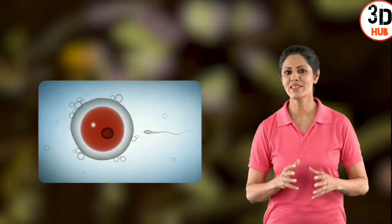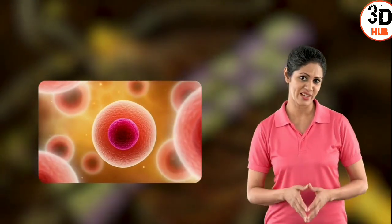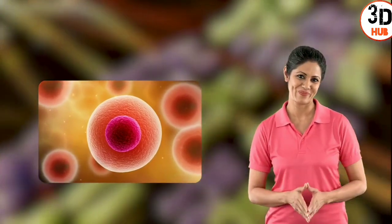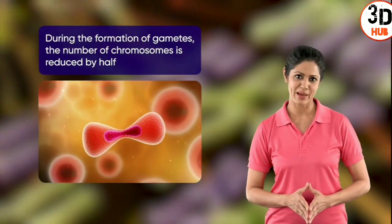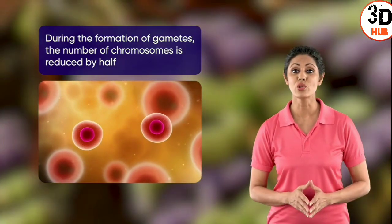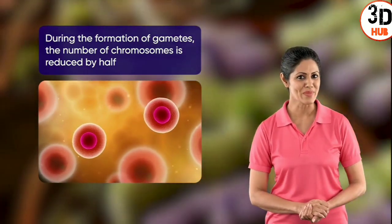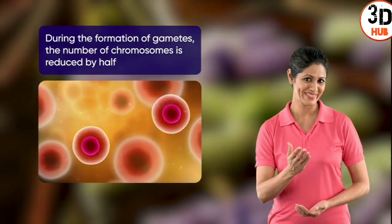There are special cells that give rise to your gametes — egg cells or sperm. When gametes fuse during fertilization, the full amount of chromosomes returns. During the formation of gametes, the number of chromosomes gets reduced by half. But how are gametes actually formed? Let's see.